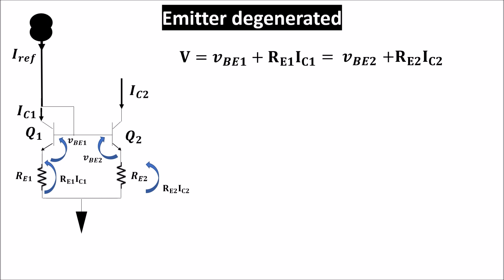If for some reason, for example a thermal difference, I_C2 increases, the drop on R_E2 increases as well. And because the voltage V on the base of Q2 is fixed by the reference current, an increase on R_E2 makes V_BE2 smaller.